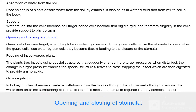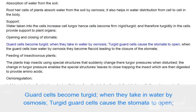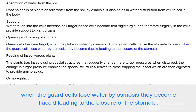Opening and closing of stomata: Guard cells become turgid when they take in water by osmosis; turgid guard cells cause the stomata to open. When the guard cells lose water by osmosis they become flaccid, leading to the closure of the stomata.